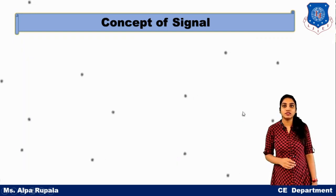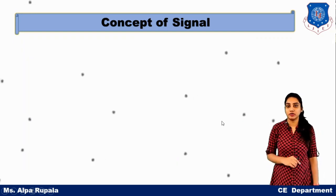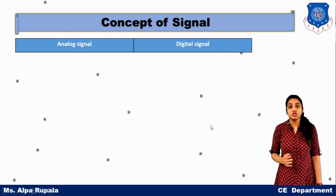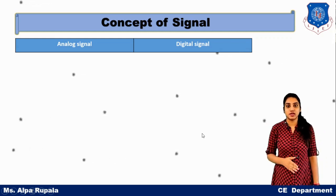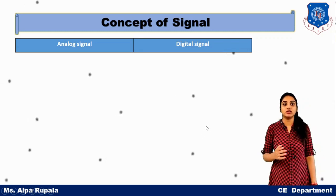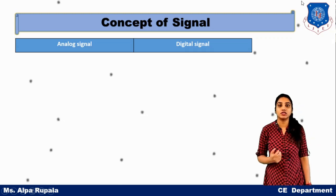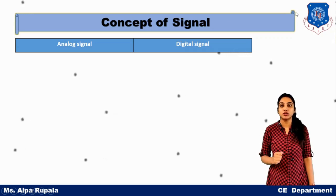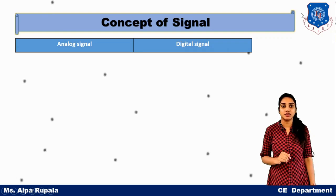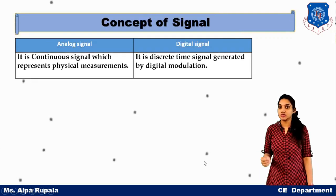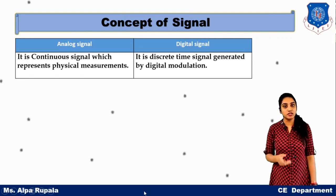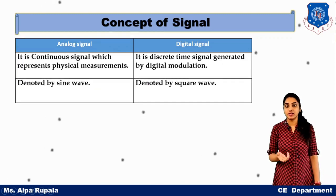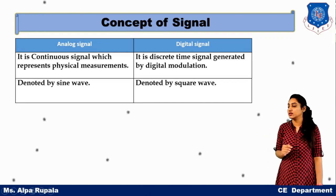Now let us discuss the difference between analog signal and digital signal. Analog is connected with continuous, whereas digital is connected with discrete. So the first difference is that analog signal is a continuous signal, whereas digital signal is a discrete signal. Examples of analog signals are sine wave and cosine wave, whereas the digital signal is a square wave. If we talk about processing in real time, analog signal is a real signal, so processing of analog is real time and it consumes less bandwidth. Digital signal is created by humans on computers, so it cannot be processed in real time and it occupies more bandwidth.